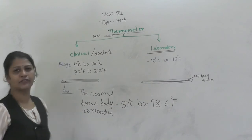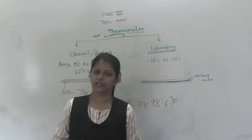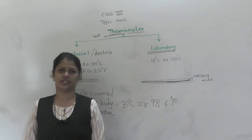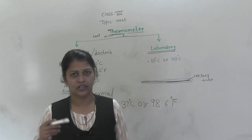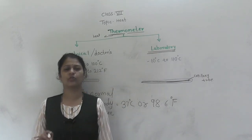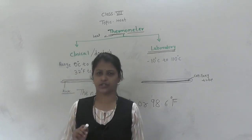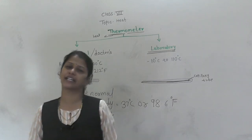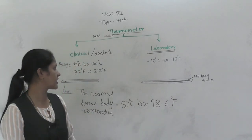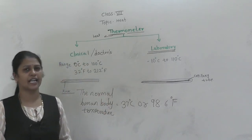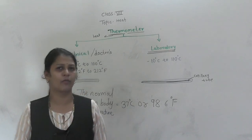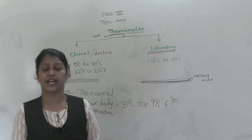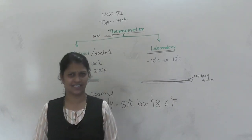If the mercury level is not at the correct position, give a small jerk. After using the clinical thermometer, again wash it with antiseptic solution. These are the precautions while handling the clinical thermometer. These are the two types of thermometers. In the next video, we are going to see word problems on how to convert Celsius into Fahrenheit, Fahrenheit into Celsius, Celsius into Kelvin, and Kelvin into Celsius. Thank you.